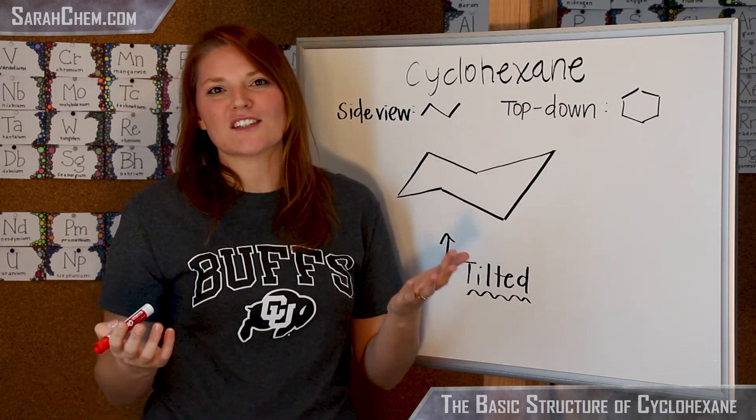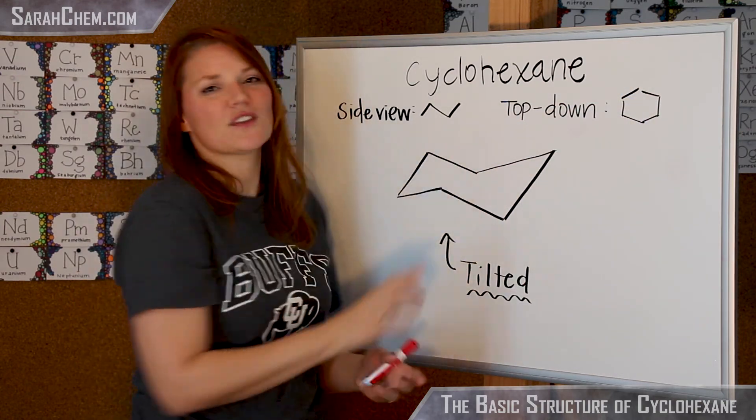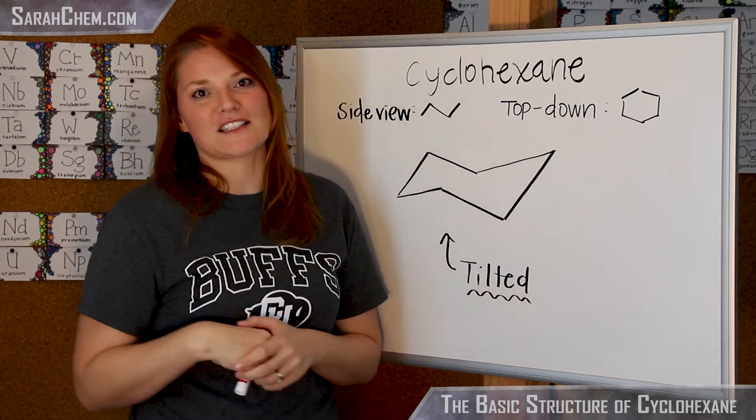So these are some of the basic ideas you need to know to understand how you go from a cyclohexane hexagon to this tilted structure that's got all of these peaks and valleys.